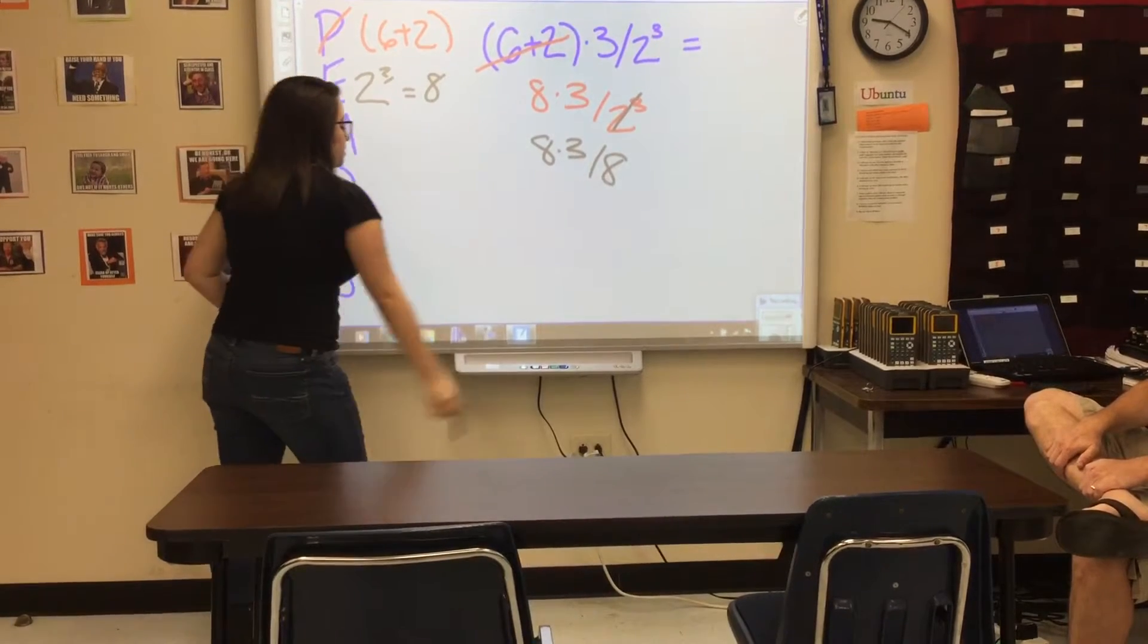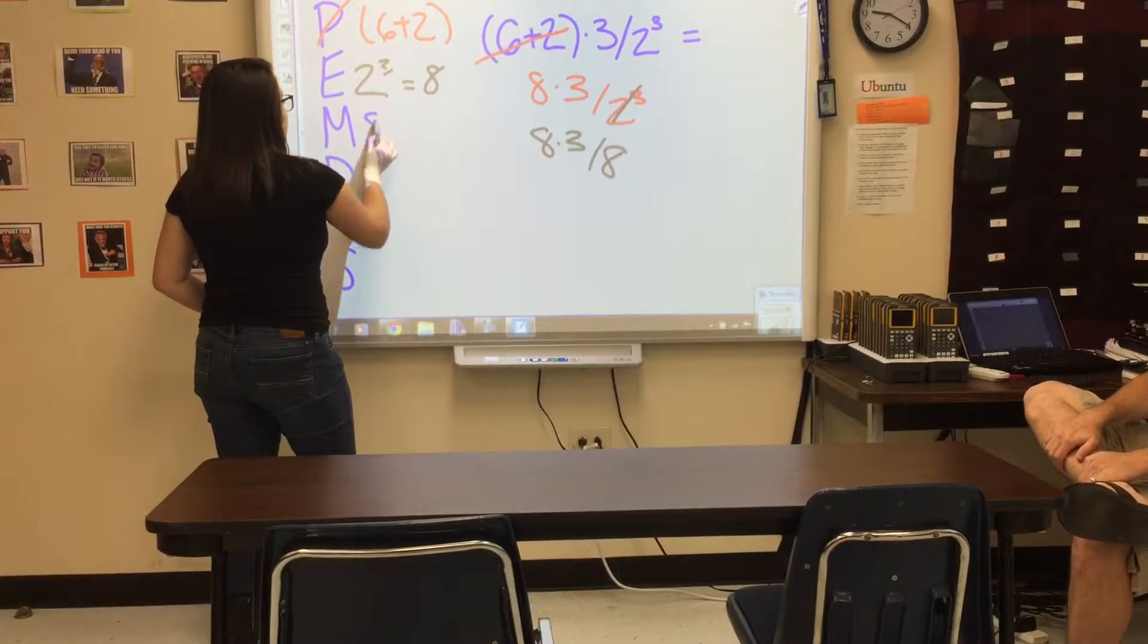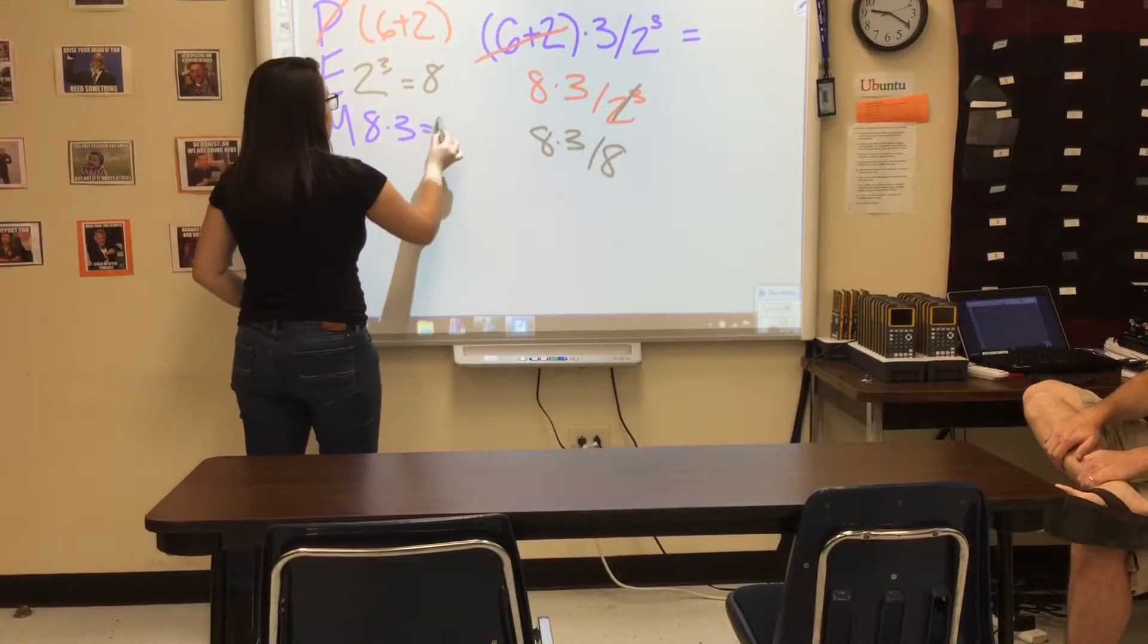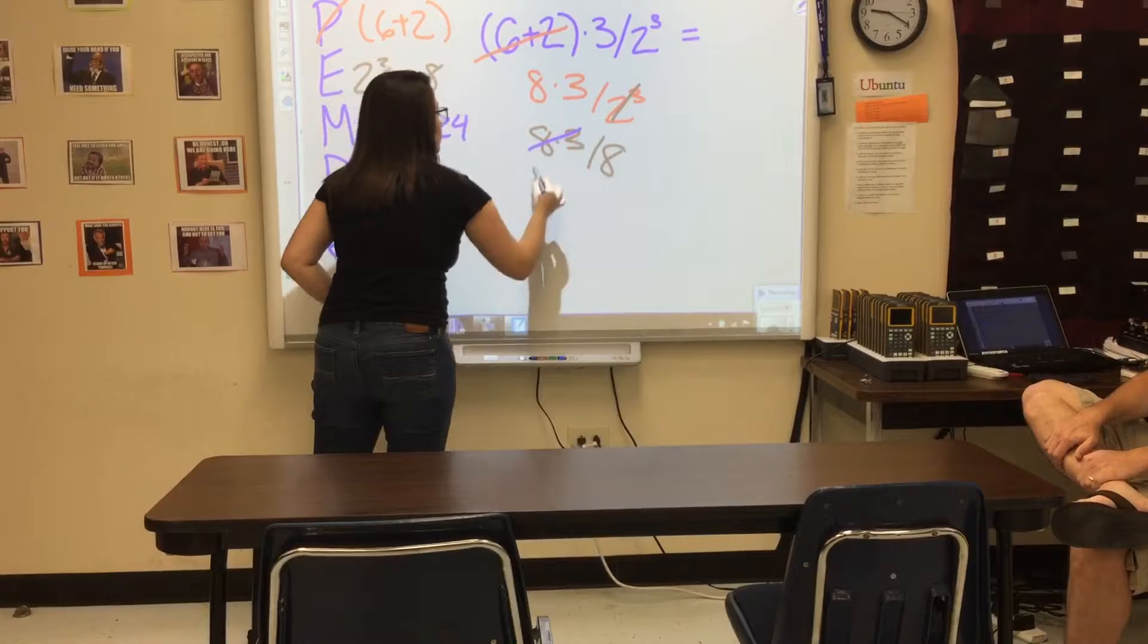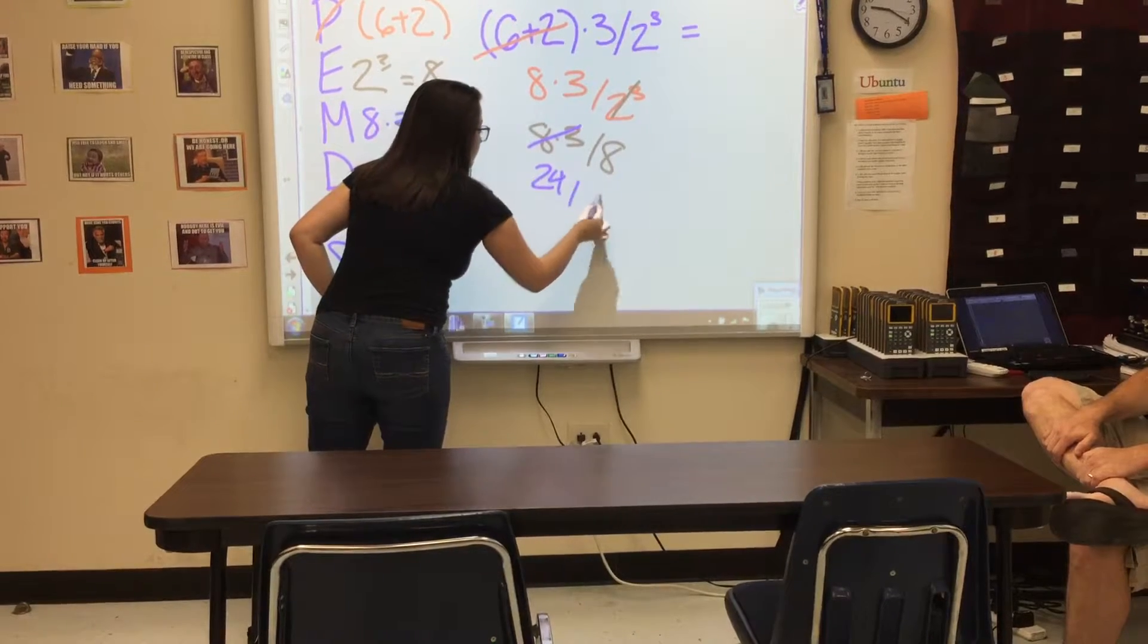Next is multiplication, so we're going to go back to the blue and multiply 8 by 3. That will now equal 24, so we're going to bring that down to 24 divided by 8.